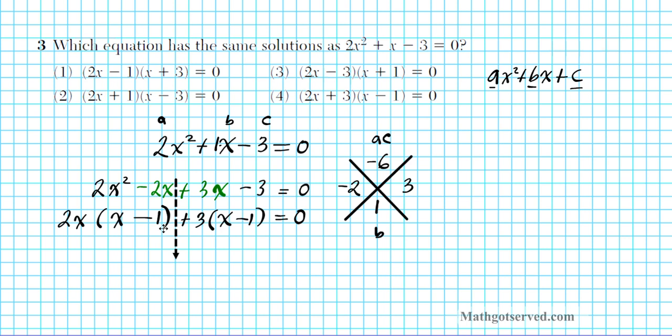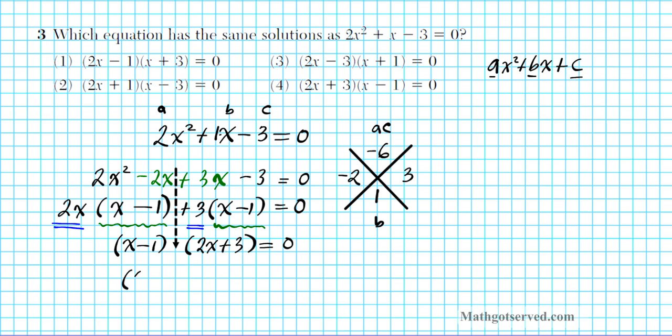Now a quick check to make sure your factorization process is accurate. These two quantities in the parenthesis must always be the same. If they're different then you made a mistake. Now what I'm going to do is I'm going to factor out the common factors. The common factors are x - 1. So if I pull out the common factors I'll have x - 1 and I'm left behind with 2x + 3. So we have times 2x + 3 = 0. Since multiplication commutes we can write this as (2x + 3)(x - 1) = 0. So let's see which equation matches this result that we got. We can clearly see that the answer to number 3 is option number 4.